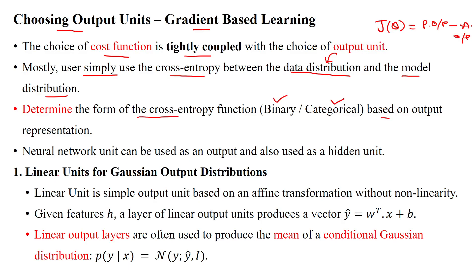In a neural network, units can be used both as hidden units and as output units. We need to decide which activation function is suitable for a given problem statement, selecting from the many available activation functions.